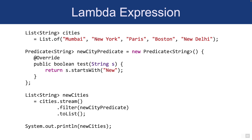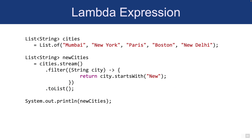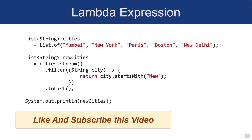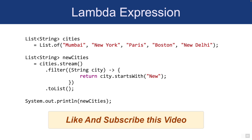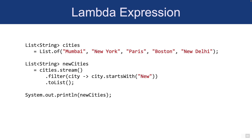It's pretty cumbersome to write that code, so instead we use a lambda expression — passing the city parameter with an arrow and then a block of code. This works fine, but we can improve it further. Since there's only one parameter and the block contains a single statement, we can simplify to just city -> city.startsWith without braces or return. Can we improve this further? That's where method references come in.